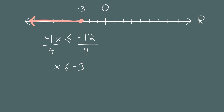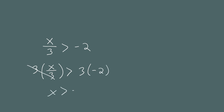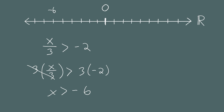Let's see a problem involving division: solve x divided by 3 is greater than negative 2. To isolate x, we multiply both sides by 3. The 3s cancel, leaving x is greater than negative 6. On the number line, we place negative 6, use an open circle because negative 6 is not included, shade the region to the right, and draw an arrowhead.